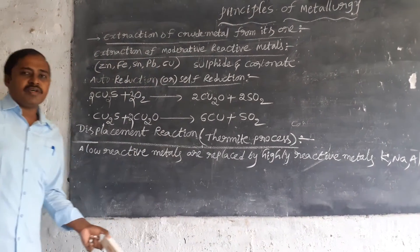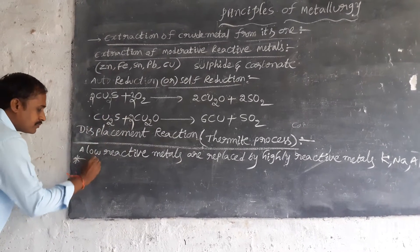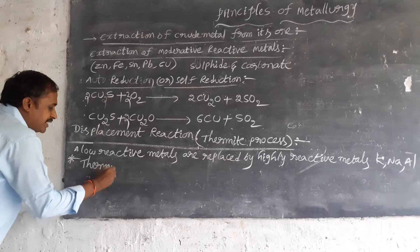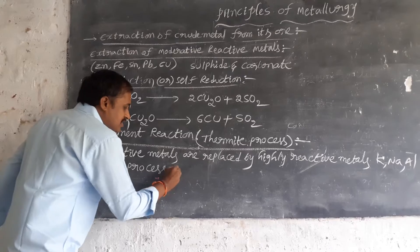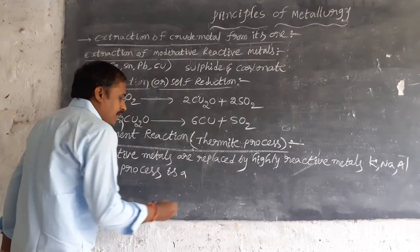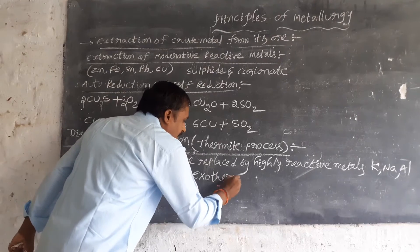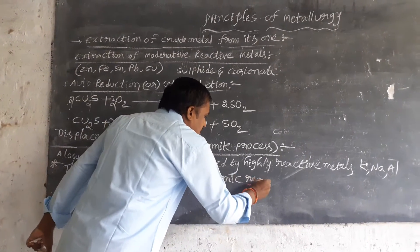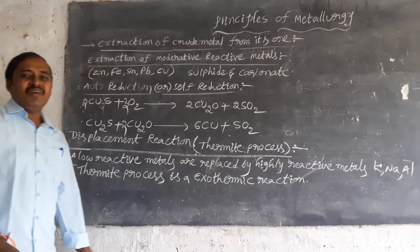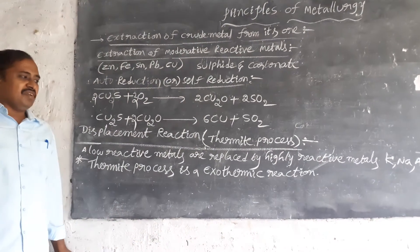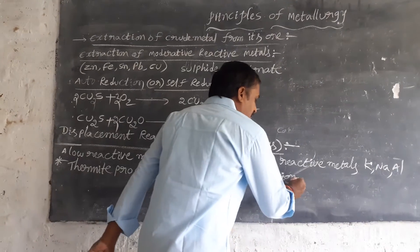The thermite process is an exothermic reaction. In this thermite process, heat is released. A large amount of heat is released in the thermite process.